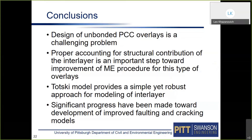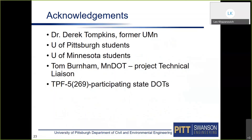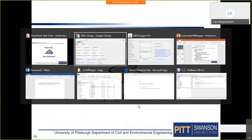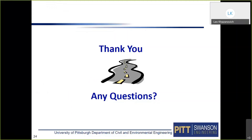A standalone software tool was developed in which the user provides location, expected traffic level, joint spacing, concrete strength, and asphalt interlayer properties or fabric type. The program performs cracking analysis followed by faulting analysis, reporting the required overlay slab thickness and cracking at specified reliability levels — for example 12%, 13%, and 50% — as well as faulting at specified and 50% reliability. A web-based version is being finalized to make the tool more widely accessible without needing to install the desktop version.